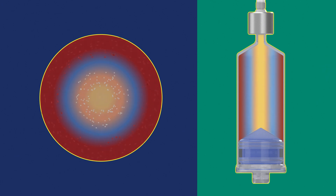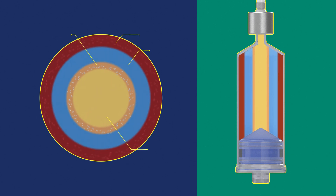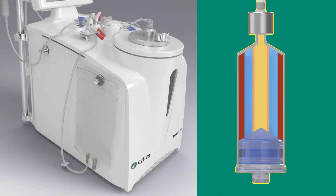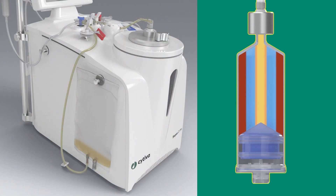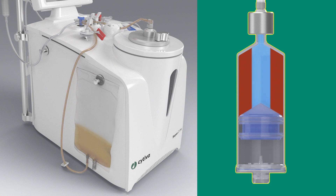NeatCell C-Pro application uses density gradient medium to separate the supernatant and mononucleated cells from the red blood cells and granulocytes by forming vertical layers inside the separation chamber. The supernatant, MNCs, and a part of density gradient medium are then extracted to the intermediate bag.